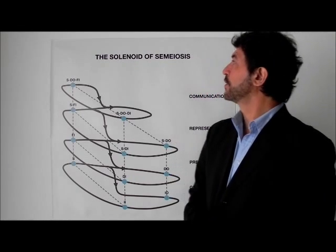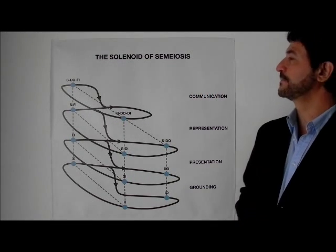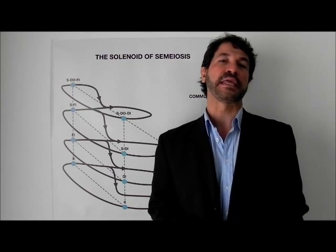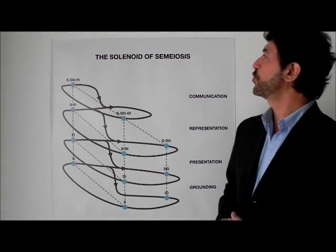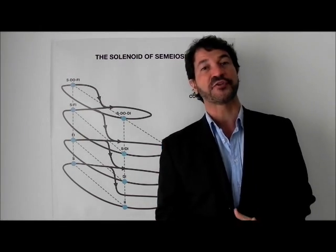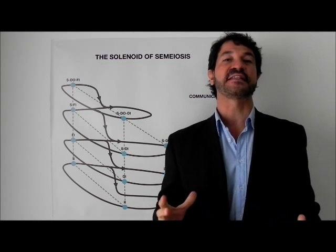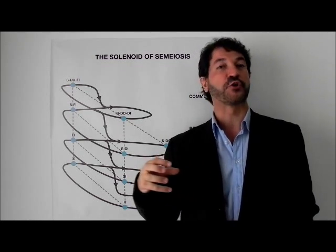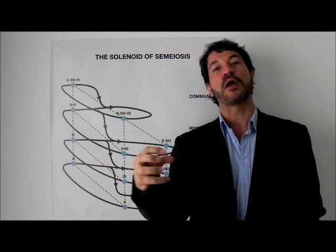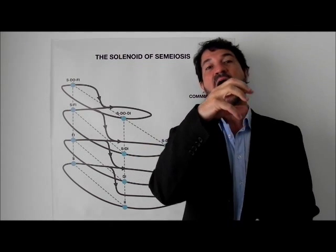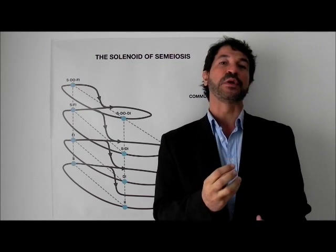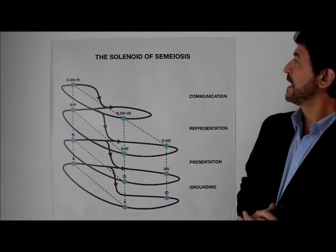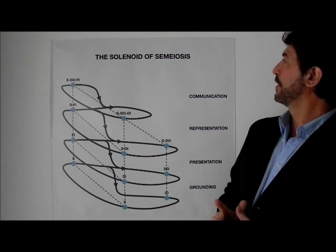Let's start with the title: the solenoid of semiosis. In mathematics, more specifically in chaos theory, the solenoid is a strange attractor. That is, a phase space which has the form of a torus that wraps around itself, but always mapping and returning to its initial point. That's what's going on in our solenoid as well.